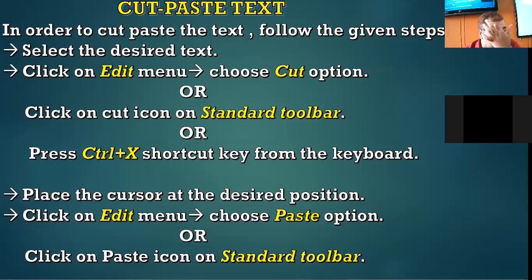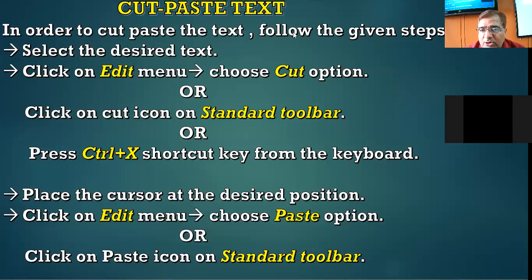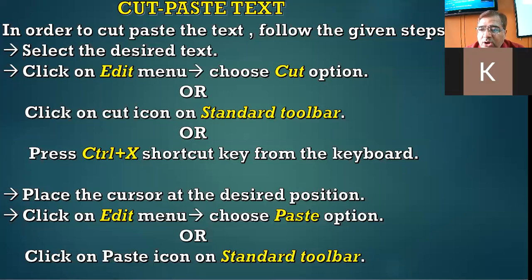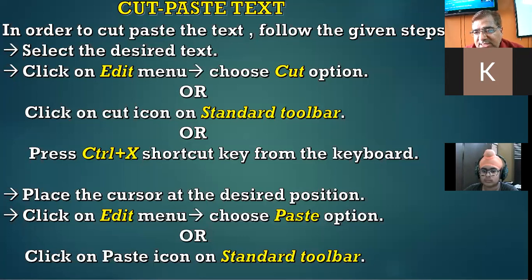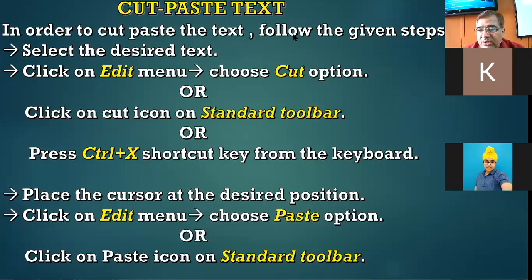Welcome back to ninth class. We continue with Open Office Writer. In the last class we discussed cut and paste — moving the position of text from one place to another. To do this, select the desired text, click the Edit menu and choose Cut, or click the Cut button on the Standard toolbar, or press Ctrl+X. The cut text is saved in the clipboard. Then click where you want to paste and choose Edit > Paste, or press Ctrl+V, or click the Paste icon on the Standard toolbar.